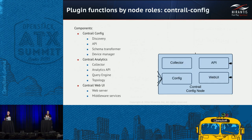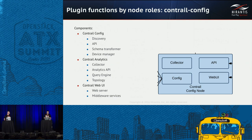The next node role is the Control Config node. This role covers three Contrail components. The first is Contrail Config, which includes the discovery service, API servers, schema transformer, and device manager. Also on this node role is Contrail Analytics, which includes the collector, analytics API, and query engine. We also install Contrail Web UI with its web server and middleware services on this kind of node. You can combine this node with the database node on the same server, but it is recommended to have an odd number of nodes to ensure high availability.